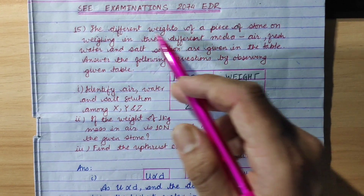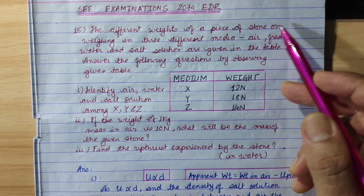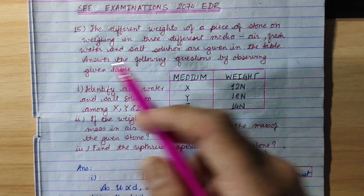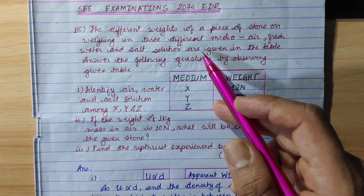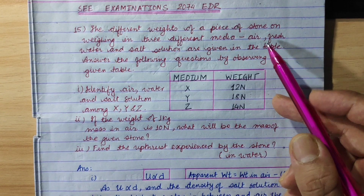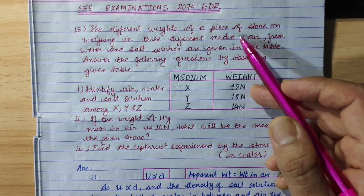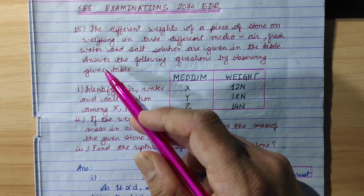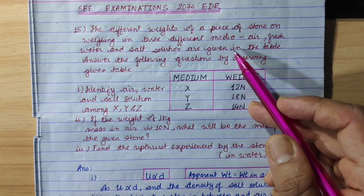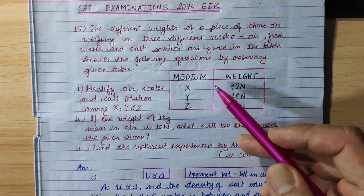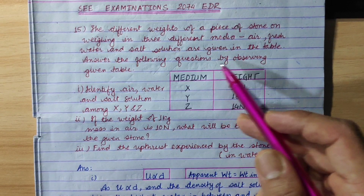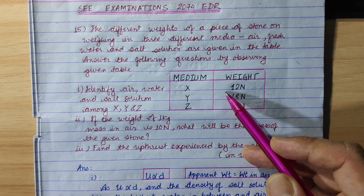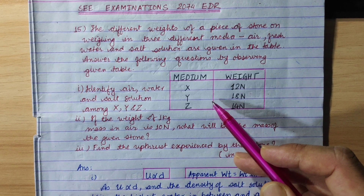The different weights of a piece of stone when weighed in three different media — air, fresh water, and salt solution — are given in the table. Answer the following questions by observing the given table.